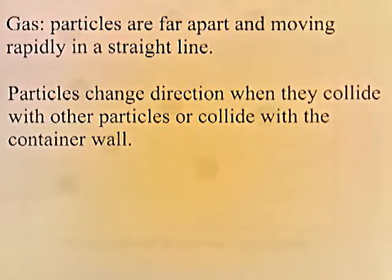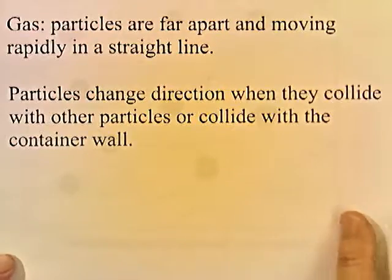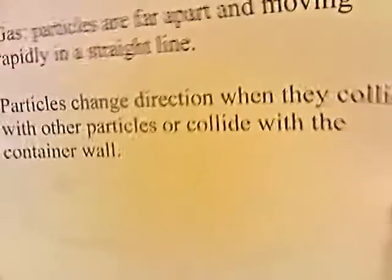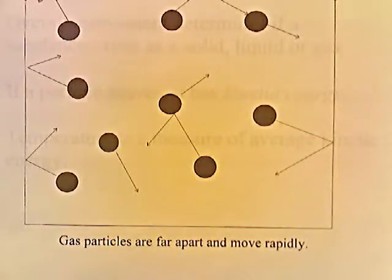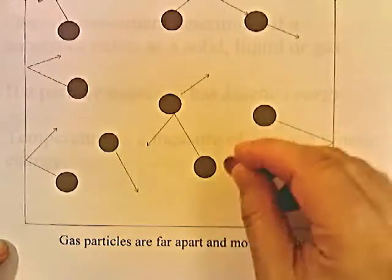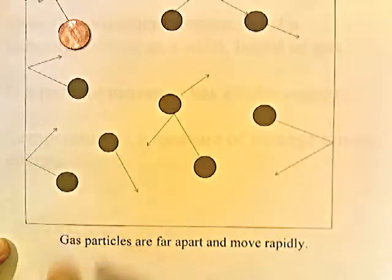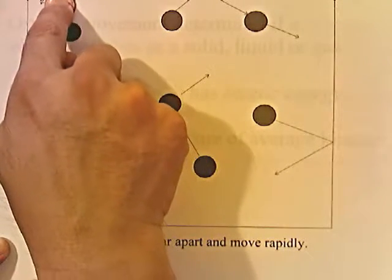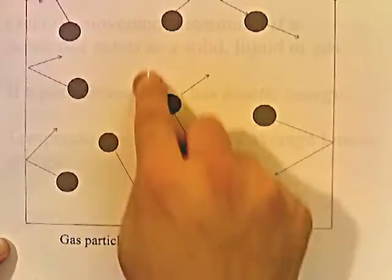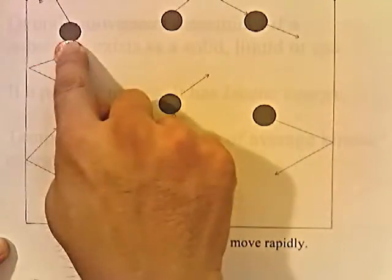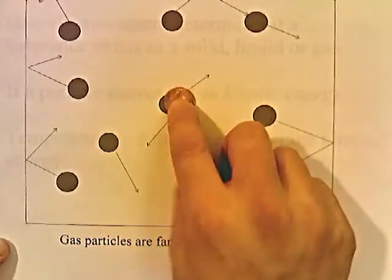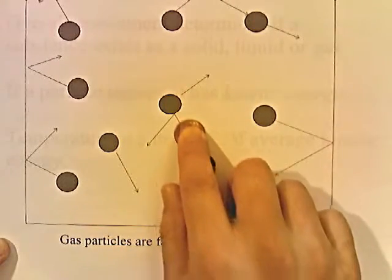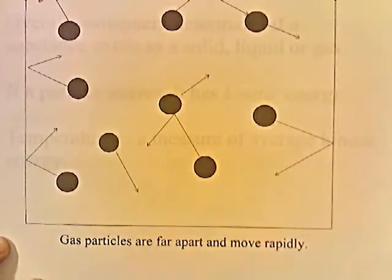In a gas, the particles are far apart, moving rapidly in a straight line. Particles change direction when they collide with other particles or collide with the container wall. So if you have a container with a gas, the particles are far apart and moving rapidly. The characteristic of particles in a gas is that they move in a straight line and only change direction when they collide into something — either the wall of the container or another gas particle.